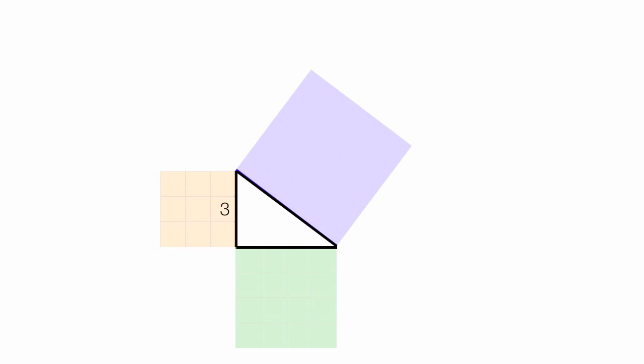The triangle is three squares high, four squares long, and the hypotenuse is five squares. And that's just the length of the side of these squares.